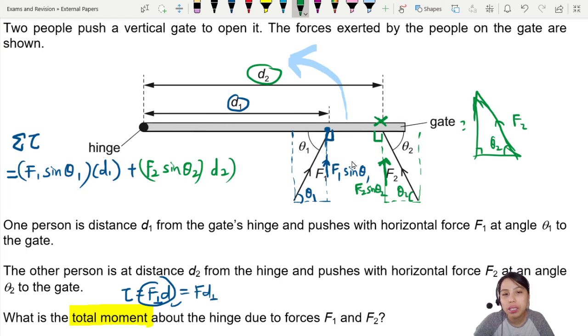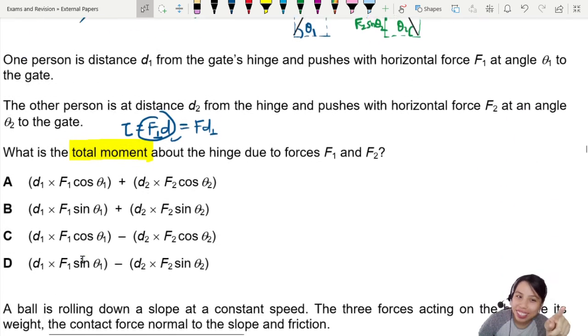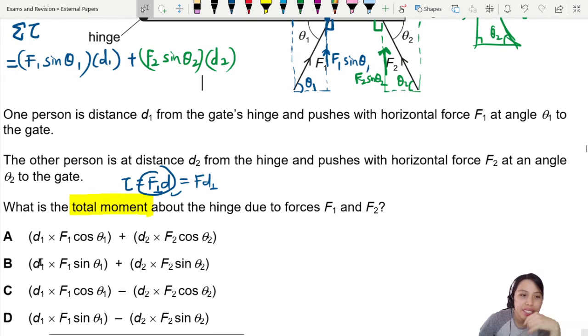I think we really got the answer, so we can go check it out now. Is there something that has d1 F1 sine theta? Okay, so we got a lot of cosine out already.